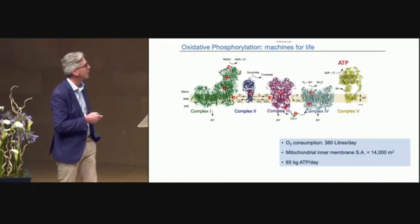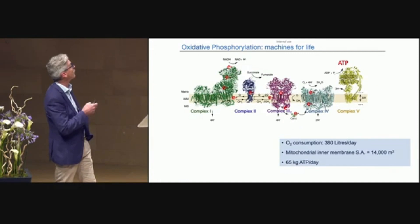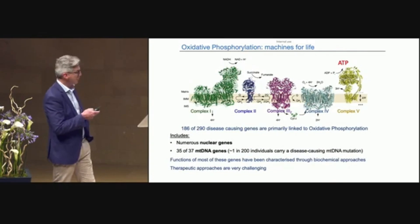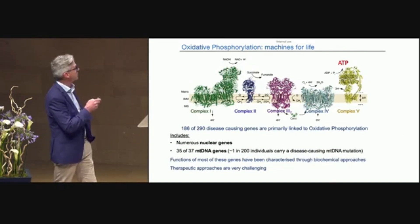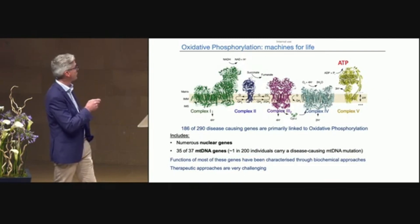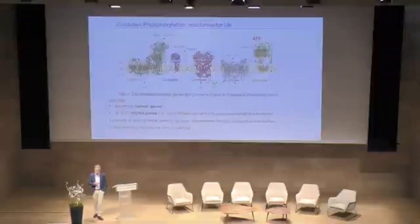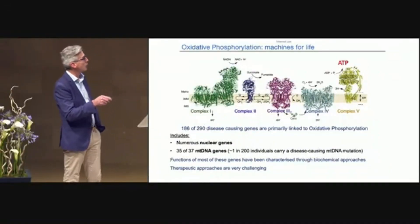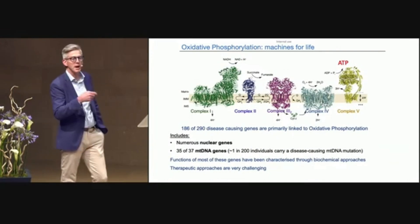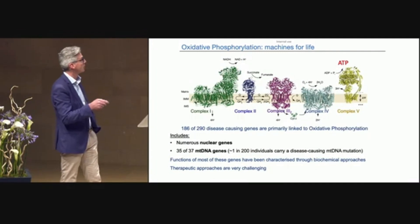This is an incredibly important process, and we now know that many different mutations affect these different processes. We have identified over 290 disease-causing genes linked to oxidative phosphorylation. About 1 in 200 of us actually carry disease-causing mutations, and there is evidence that over time, ageing leads to accumulation of more mitochondrial DNA mutations because this process generates reactive oxygen species that can damage mitochondrial DNA in the long run.